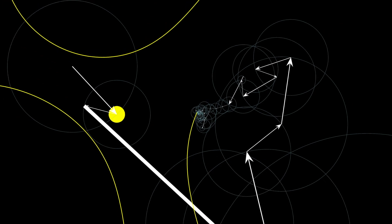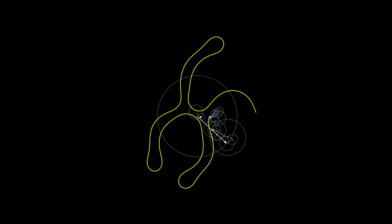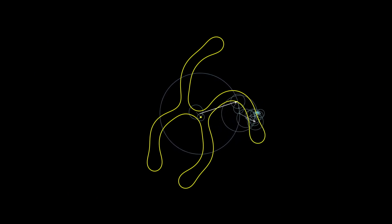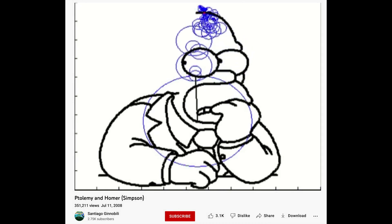Now, as many of you are probably aware, Fourier series has been around for 200 years, and a quick Google search will yield many examples of interesting orbits. Perhaps the most famous is one that's in the shape of Homer Simpson, as first demonstrated by Santiago Ginobili back in 2008.